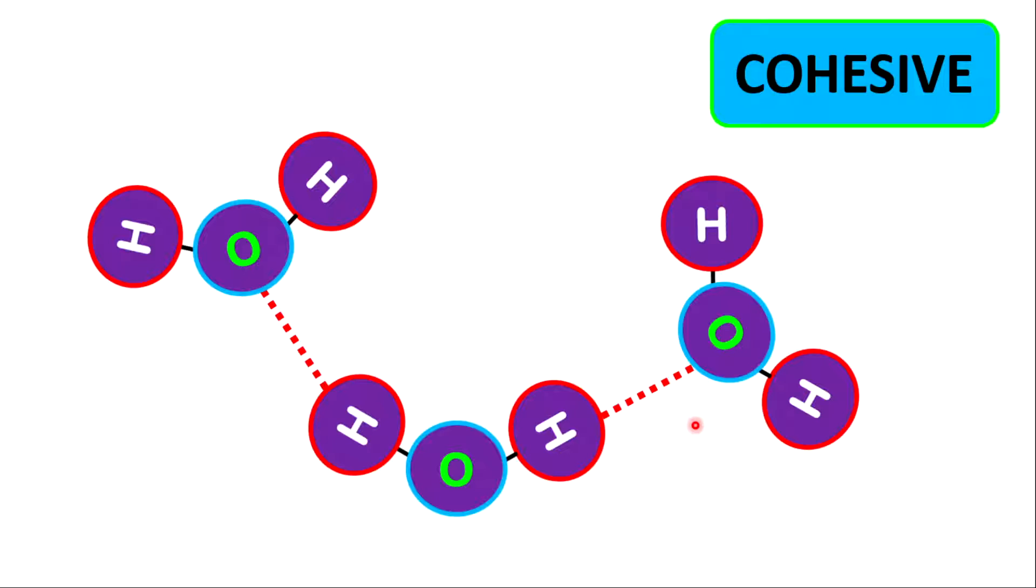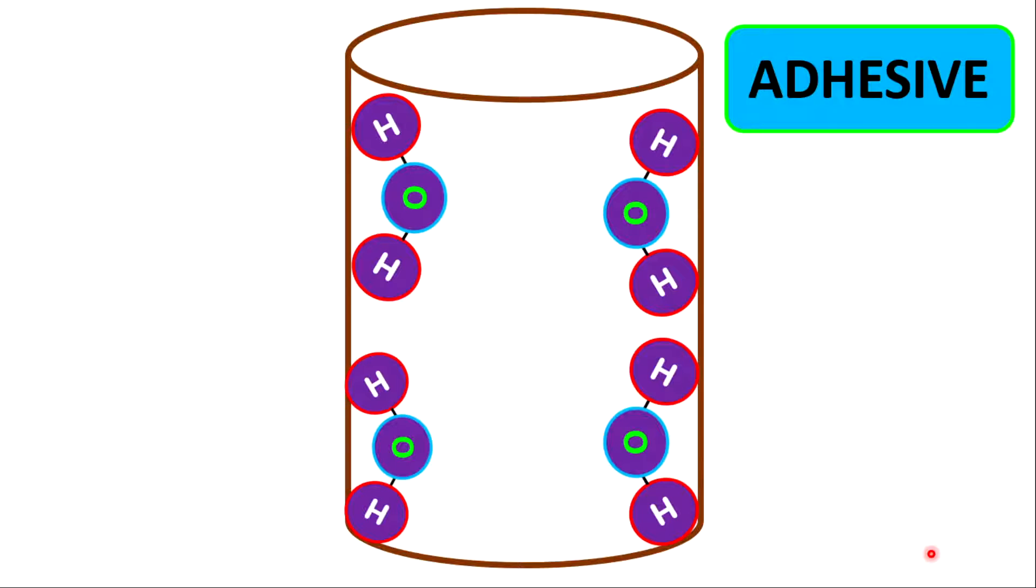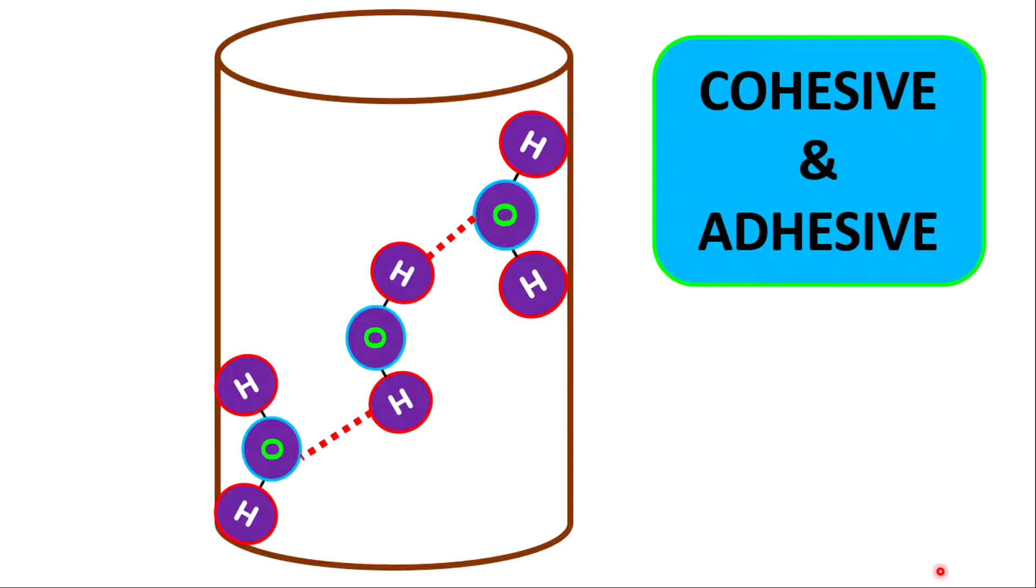This is what is contributing to the cohesive property of water. The other property is that water is adhesive. What this means is that water molecules can attract to other substances. The reason for this is that water is polar, which means one end is positive and the other end is negative. Hence, water can attract to other polar substances. In conclusion, we can state that water is both cohesive and adhesive.